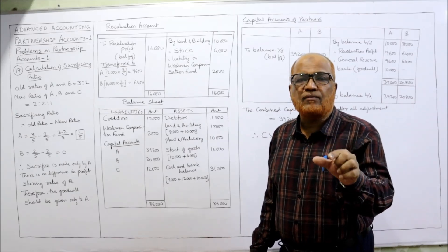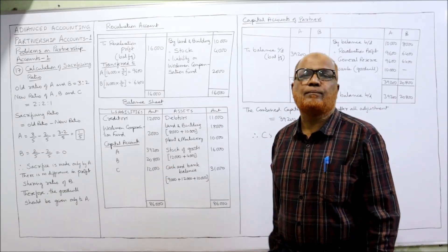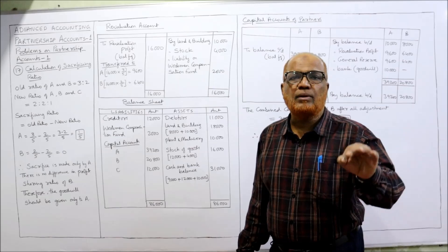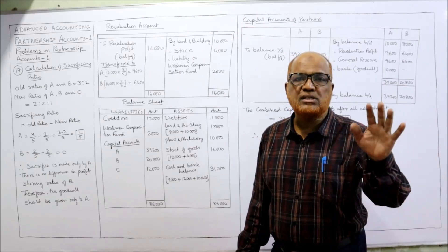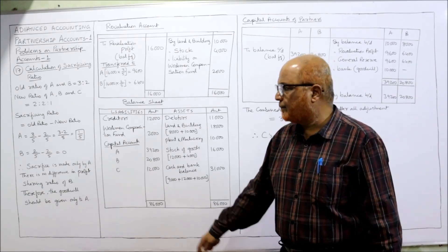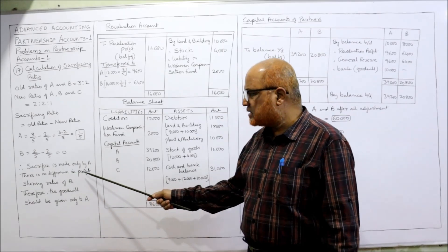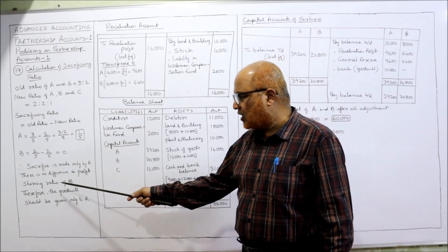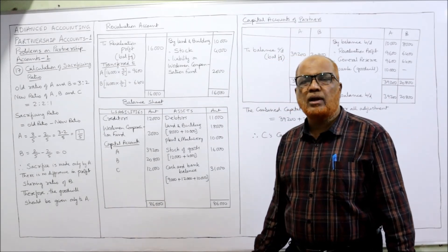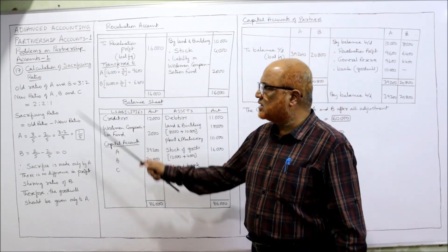Since B makes no sacrifice, the whole goodwill brought in by C will be given to A, because only A sacrifices. B is not sacrificing, so there is no change in B's profit sharing ratio. Therefore all goodwill brought in by C goes entirely to A — that is the key point here.